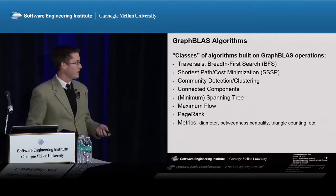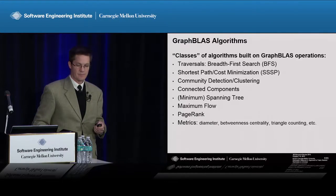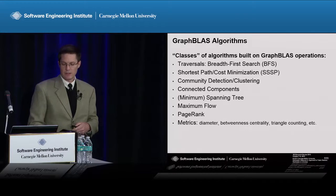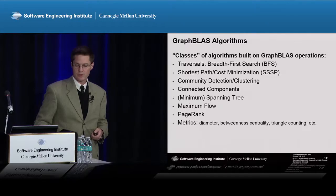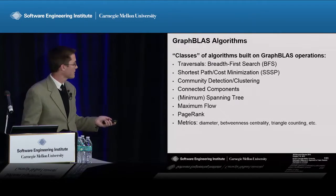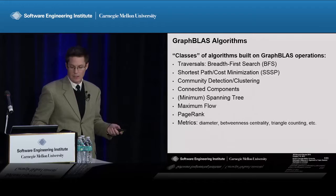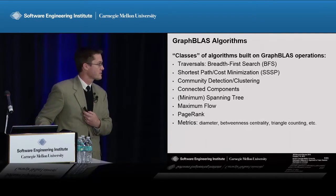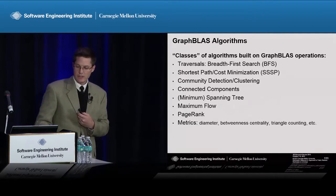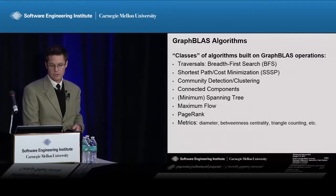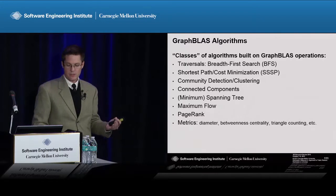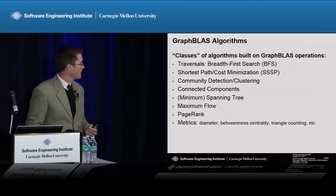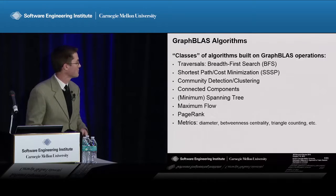We've also developed a number of algorithms on this API to prove that the API is complete in some sense. We have traversal algorithms such as breadth-first search and shortest path — common benchmark algorithms. Clustering and community detection are especially useful for cyber and computer network security. Other useful algorithms include connected components, spanning tree, max flow, page rank for social network analysis, and a number of graph metrics.